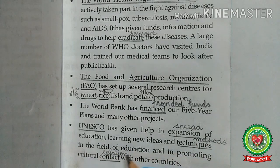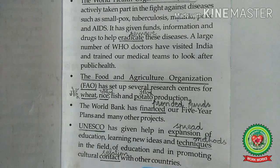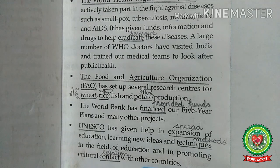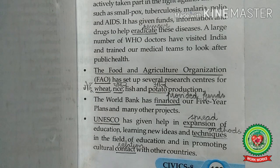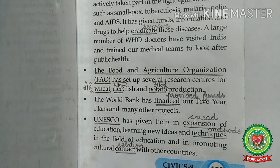UNESCO — the United Nations Educational, Scientific and Cultural Organization — has given help in the expansion of education, learning new ideas and techniques in the field of education, and in promoting cultural contact with other countries. The main aim of UNESCO is to spread education and preserve cultural heritage, and UNESCO is giving full support to India in preserving its cultural heritage and expanding education. We can conclude that both India and the United Nations are helping each other in achieving their aims and objectives. Today's homework is to learn the lesson on the United Nations.